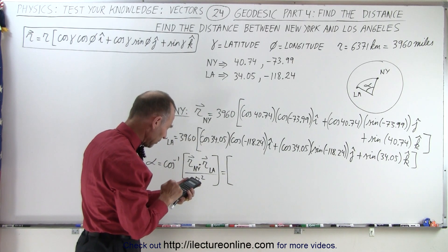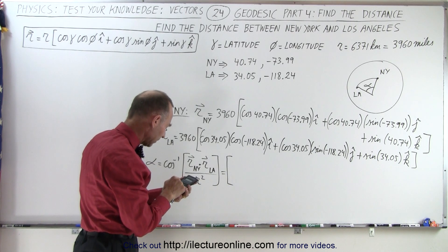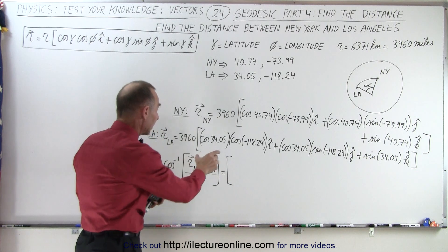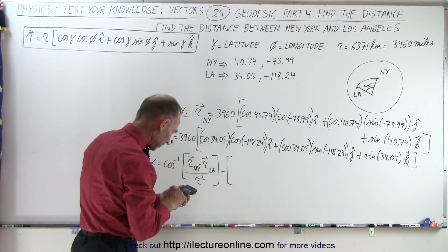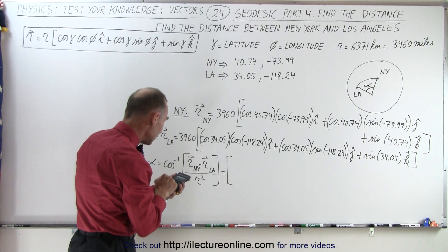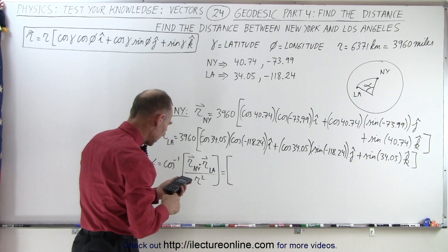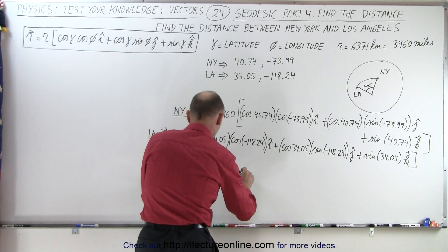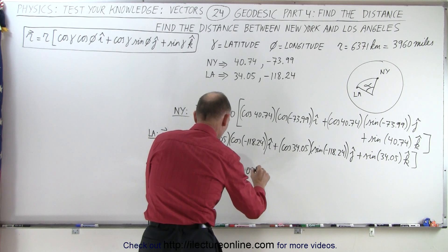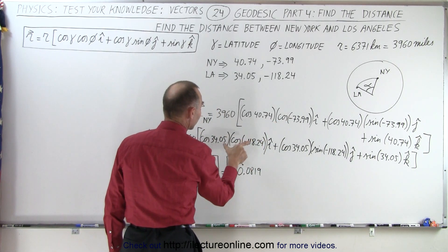We need a calculator for that. First, take the cosine of 40.74, multiply times the cosine of 73.99, and multiply that times the cosine of 34.05 times the cosine of minus 118.24. That gives minus 0.0819. So I've taken the x-component of the NY vector and multiplied it by the x-component of the LA vector.